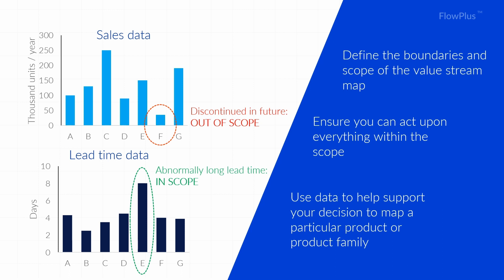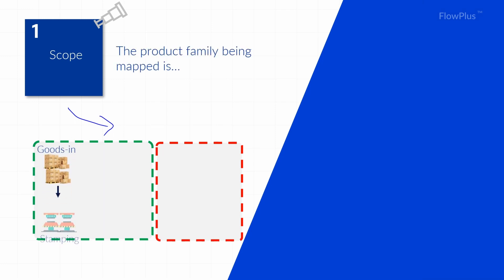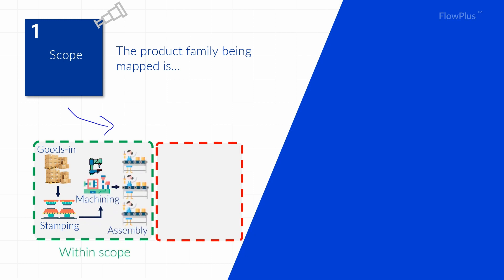It's really that simple — that is the first part of the VSM process, understanding the scope of the map. Make sure you do this to avoid confusion later, and pick one product type that everyone is familiar with to refer back to. By the end of the scoping exercise, you and the team will have a concrete understanding of what processes to map and what product family or product is being mapped.